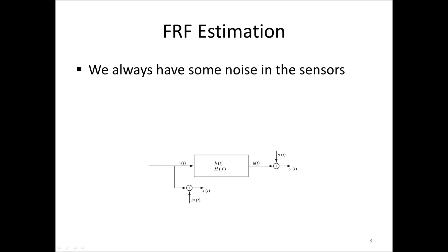We start by the model we will use for the FRF estimator. We assume that we have a linear system described by the true frequency response H of F. The linear system has an input V and an output U, which are, in the general case, not possible to measure. Instead, we measure the signals X and Y, which are both contaminated by independent or uncorrelated noise, M on the input and N on the output.